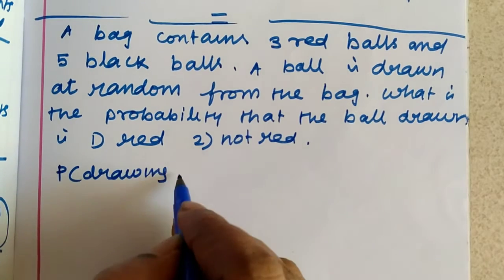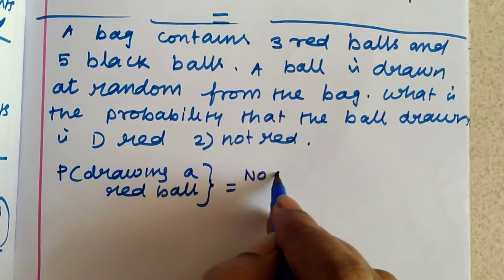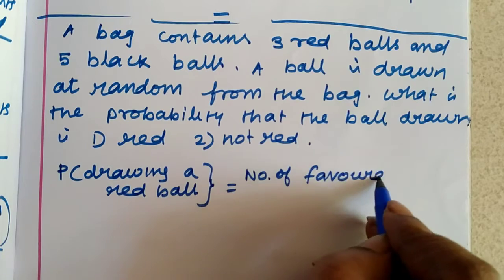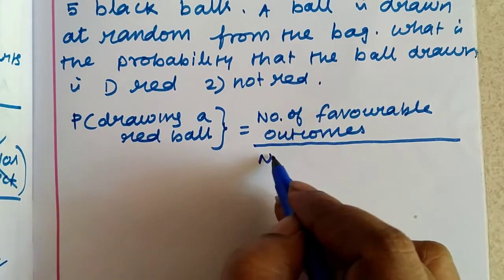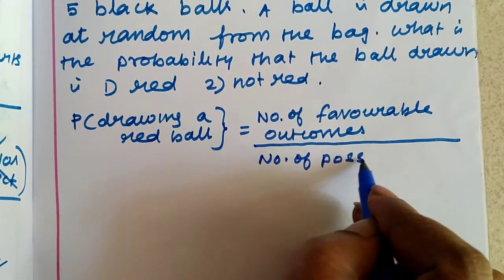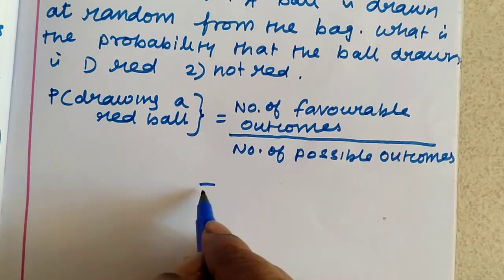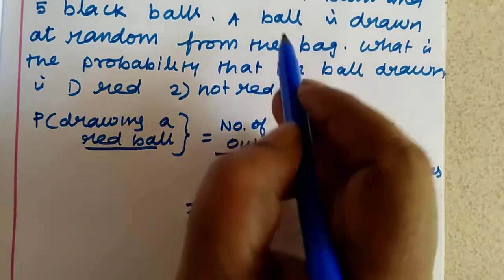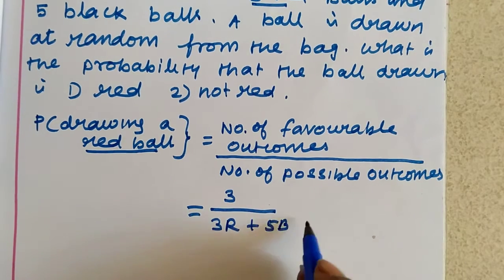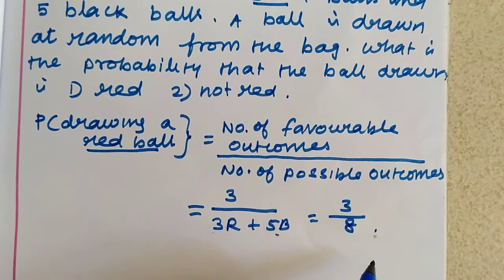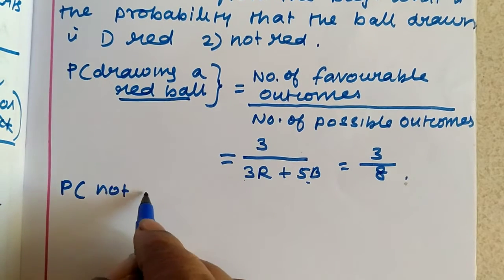Probability of drawing a red ball equals number of favorable outcomes divided by number of possible outcomes. Favorable outcomes means drawing a red ball; number of possible outcomes means total number of balls.